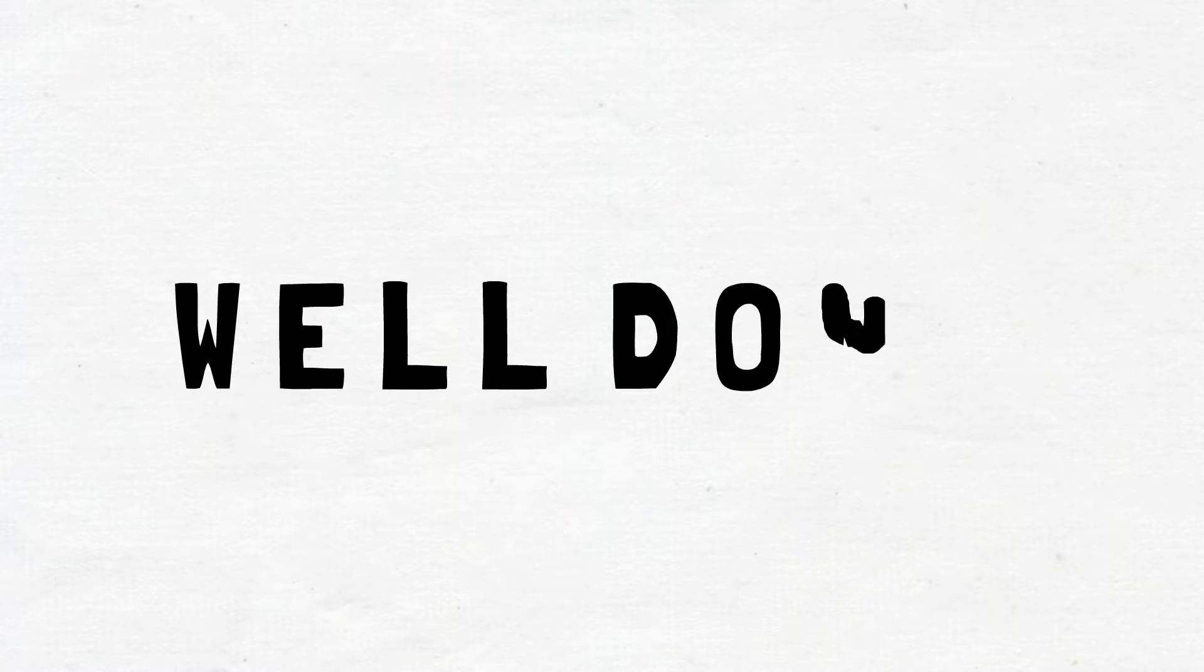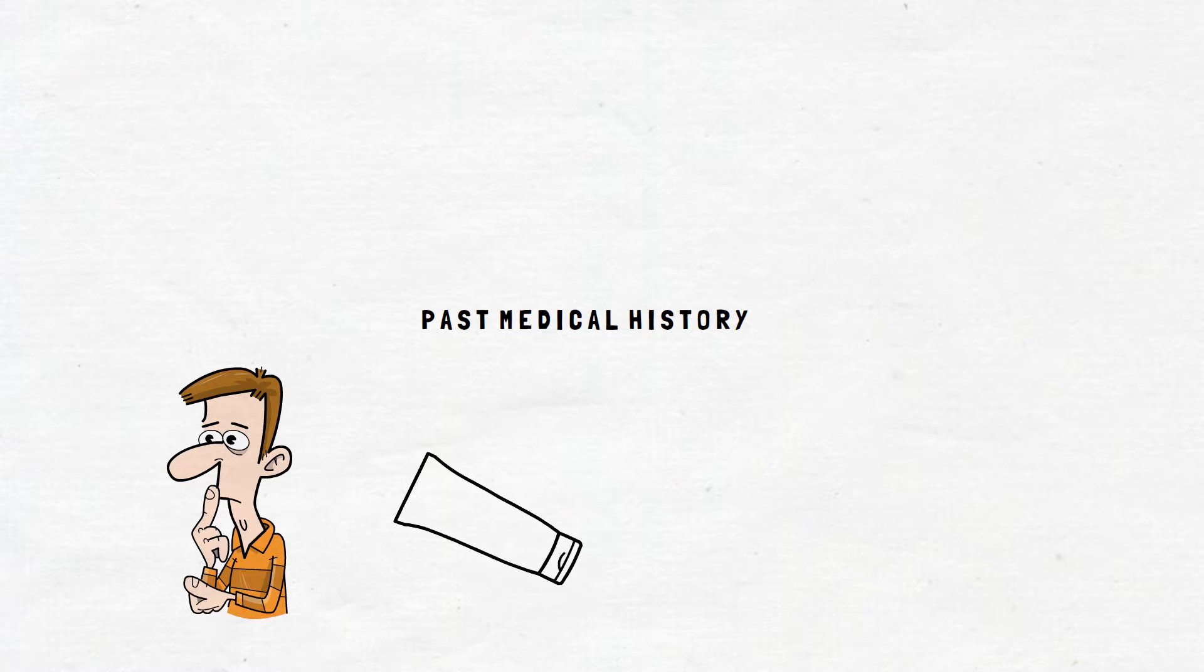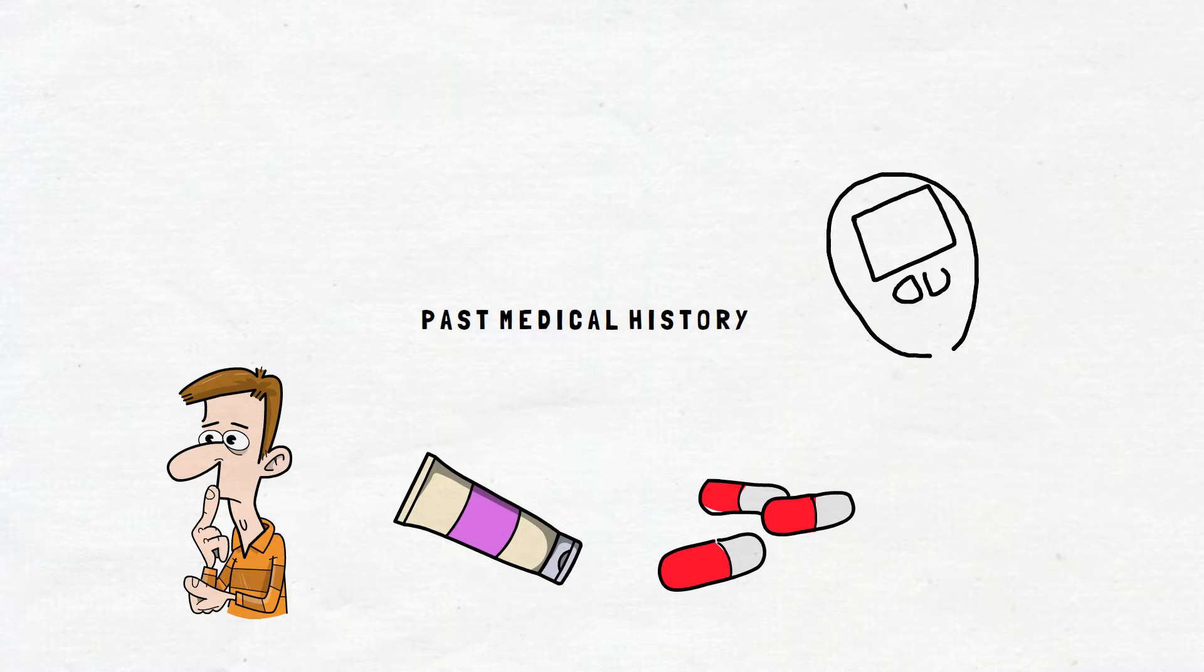Well done. We've done the main part of the history taken. Now, let's move to the past medical history. I normally just ask, have you had this kind of rash before? And if so, what have you tried? Did the treatment work or not? Then you can ask them some particular questions such as any past medical history of diabetes.